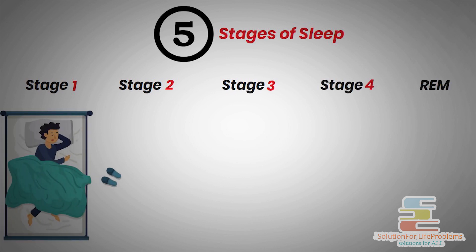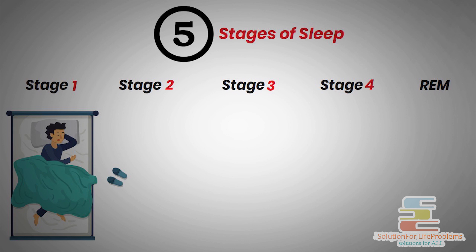Stage 1 sleep is very light sleep and we can be awakened easily as muscle movements continue slowly. Stage 2 sleep is where our brain waves, now sending signals to the brain, slow down.